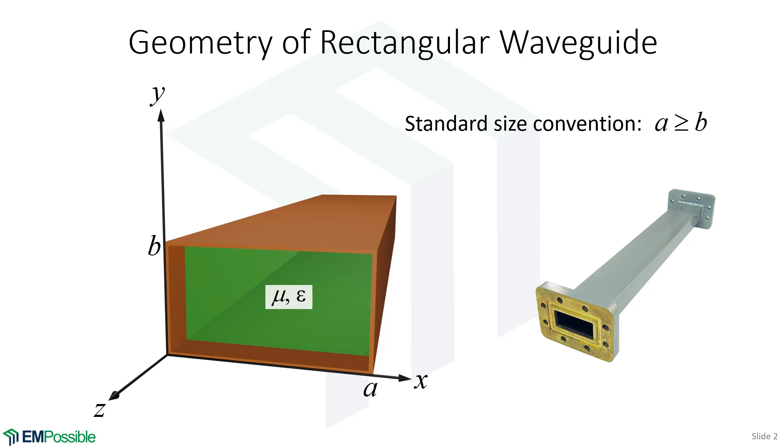We're not looking at the inhomogeneous case because then it would not support TE and TM modes to even analyze, and it would become a hybrid mode analysis. The convention is that the width of the guide is longer than its height. It's very rare to specify a rectangular waveguide where the height, this parameter b, would be greater than its width a. So the convention is that a is greater than b.